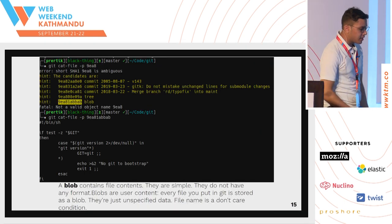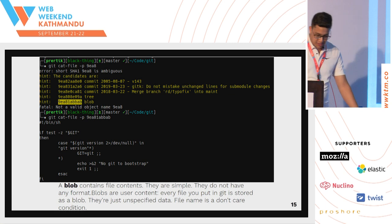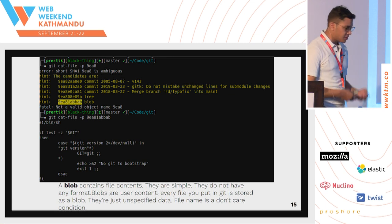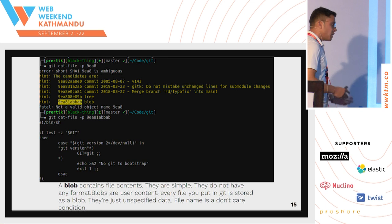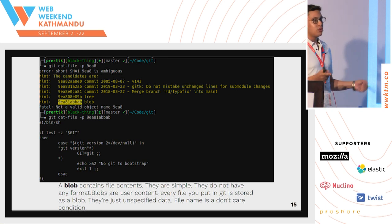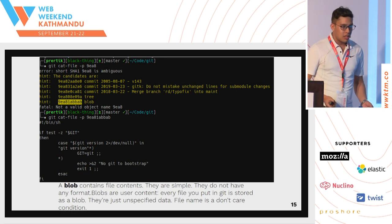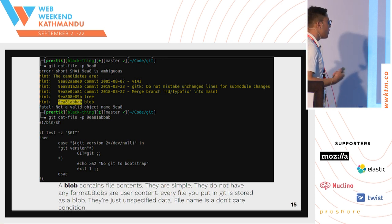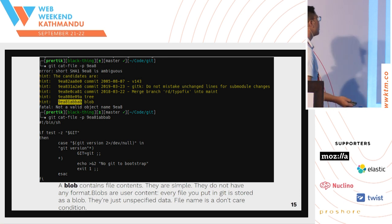A blob contains file components. Blobs are really simple — they don't have any logic. They just look at your content, generate a hash key, and they're done. If two file contents are the same, a blob can be the same. But a commit can be different — I'll come to that later.